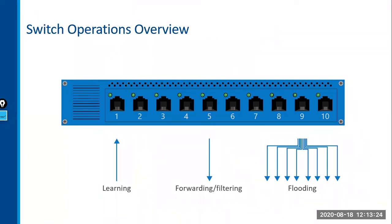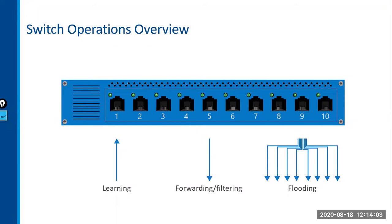Now, switch operations — how does switching work? Switches perform three primary functions. The first function is learning: they learn MAC addresses so they can forward data intelligently. As part of forwarding data intelligently, they will forward to the appropriate port and filter everywhere else. There are also circumstances under which the switch doesn't know how to forward more intelligently, so it will flood — sending the data out of all ports except the port it came in on.